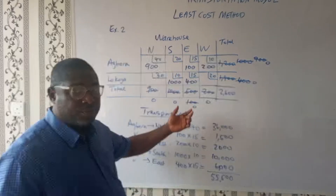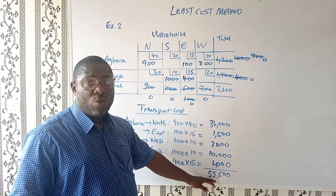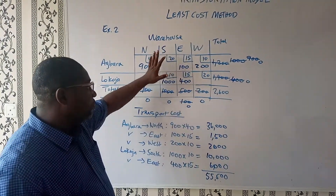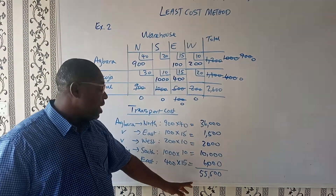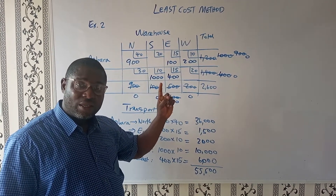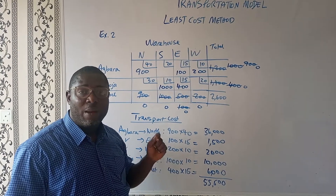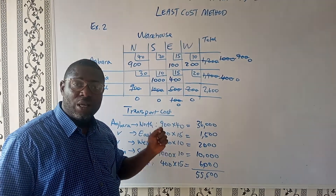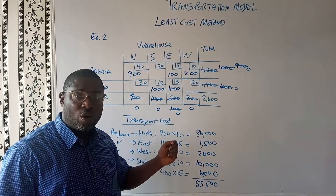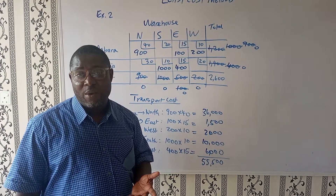Now I wanted to compare the answer you got in this question — 55,500 — with the solution from the Northwest Corner method, Example Three. Remember this example we did in the Northwest Corner, Example Three. I wanted you to compare this answer of 55,500 with the answer in that lecture, and tell me in the comment section which of the two methods you would apply as a manager of this company — which method gives less cost. Thank you. Please do subscribe and share this video.